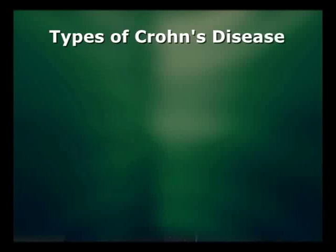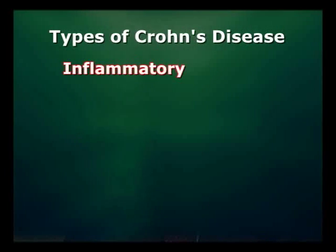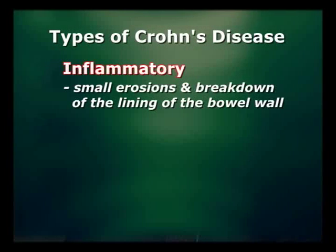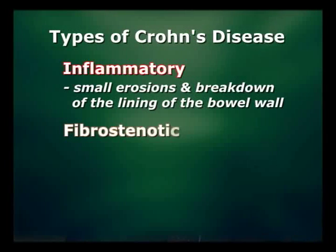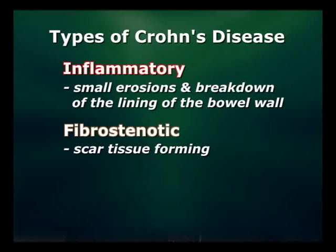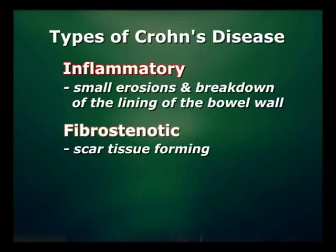There are different types of Crohn's disease, and the different types may present with different findings and different complications. One type is inflammatory in nature, and it results in small erosions and breakdown of the lining of the bowel wall. Another type is what we call fibrostenotic, which tends to be more scar tissue forming, so the inflammation is healed by the body, but the resulting scar tissue can cause obstructive symptoms where the bowel is not moving properly.